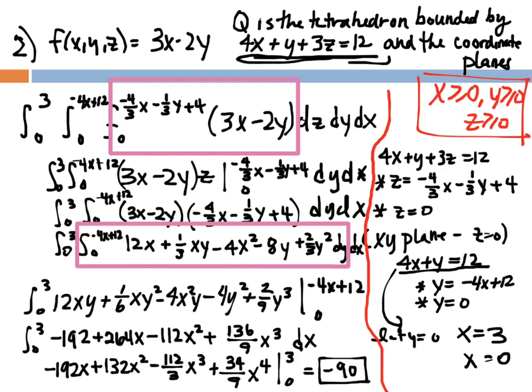Plugging in y = -4x + 12 involves squaring and cubing that expression, which is quite messy. After that scratch-paper algebra, the result is -192 + 264x - 112x² + ¹³⁶⁄₉x³. Integrating one final time gives -192x + 132x² - ¹¹²⁄₃x³ + ³⁴⁄₉x⁴, evaluated from 0 to 3. For messy fractions like this, it's convenient to enter the expression into a calculator's y1 and evaluate at 3. The final answer is -90.